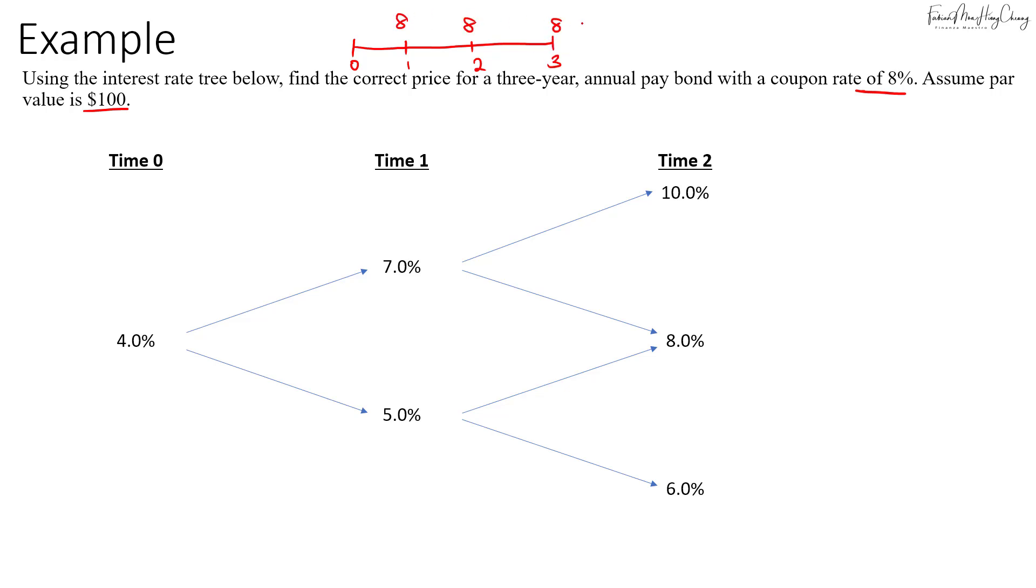And on top of that, in year 3, we will have the par value of $100. So if you plot this cash flow out on this interest rate tree, in time 3, I will have $108, and we'll list that down three times for each of the interest rates.